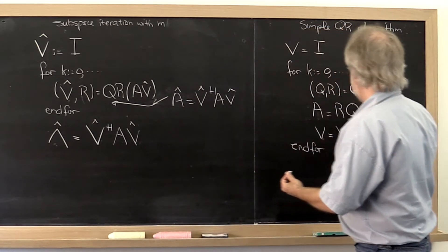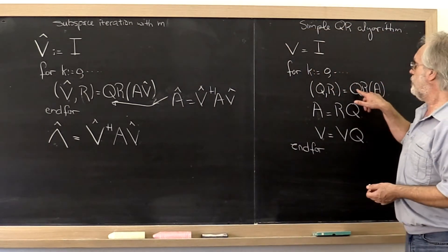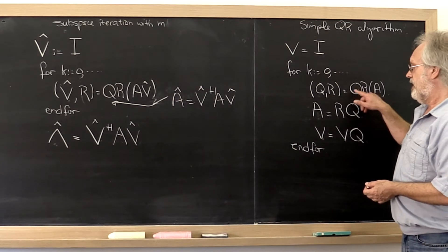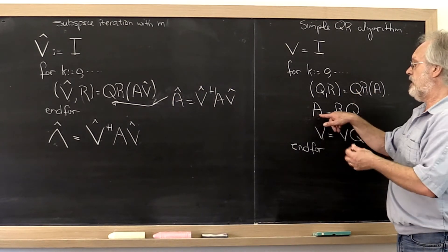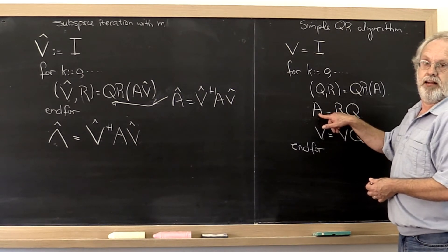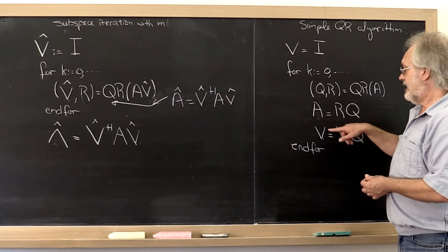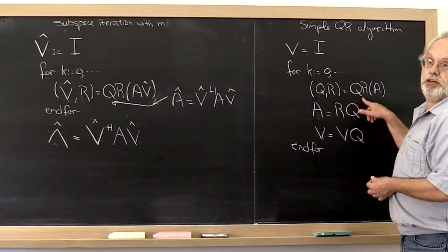So what's happening on this side here is we compute the QR factorization and then we say let's adjust the basis in which we view our matrix A, and then let's continue our subspace iteration.